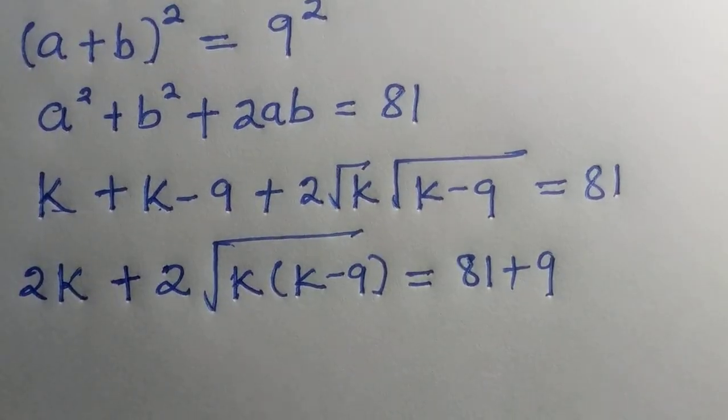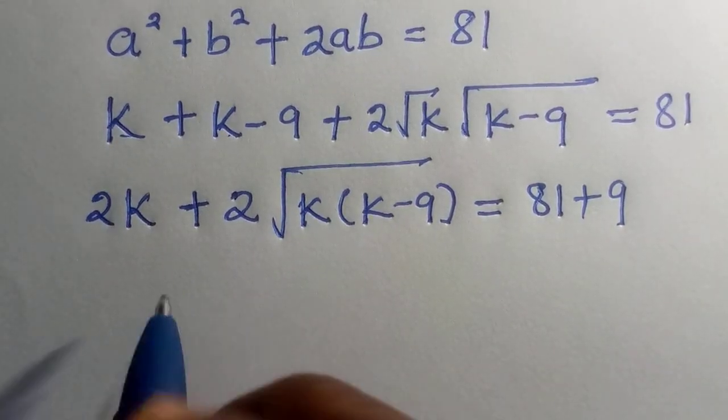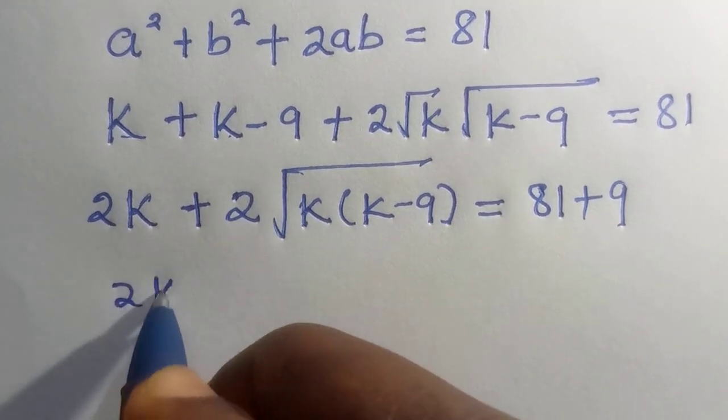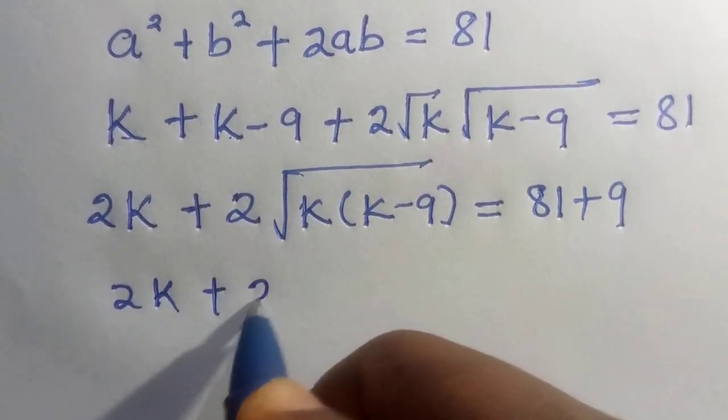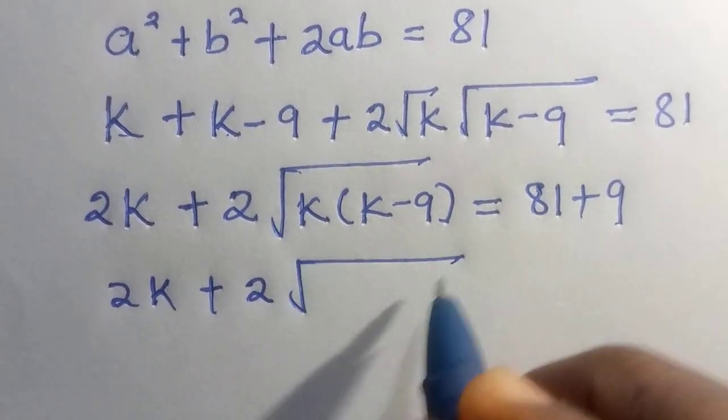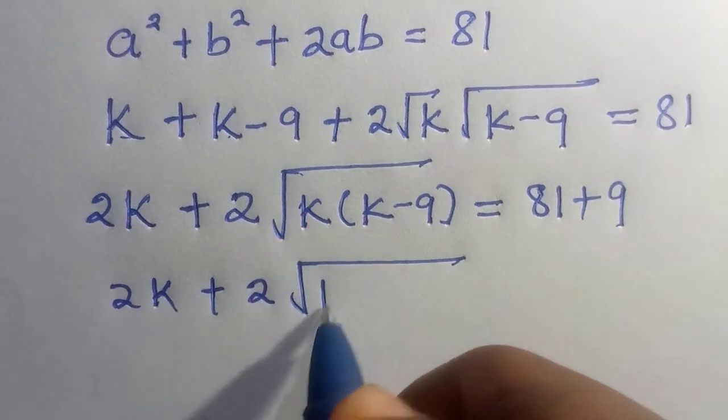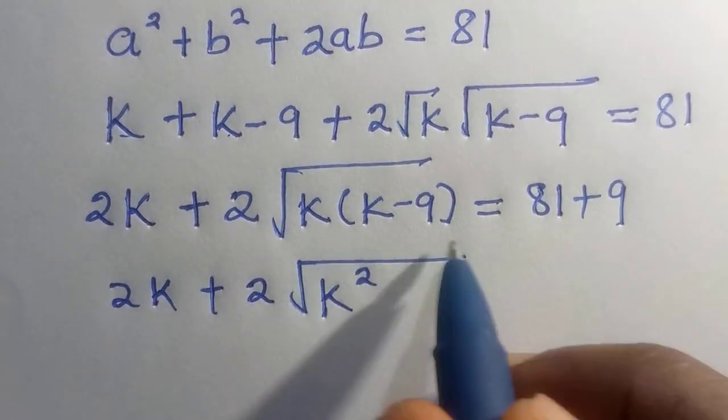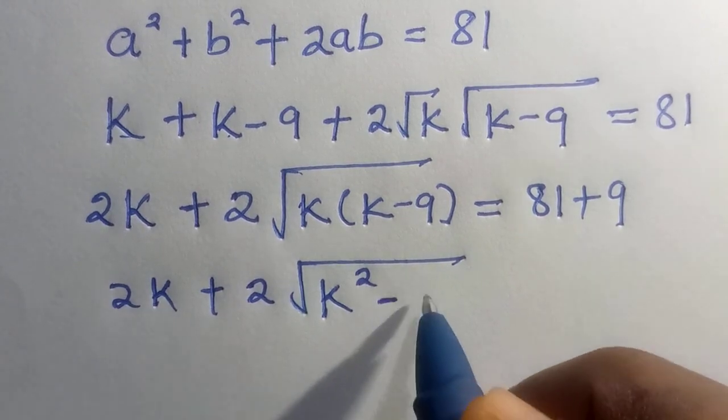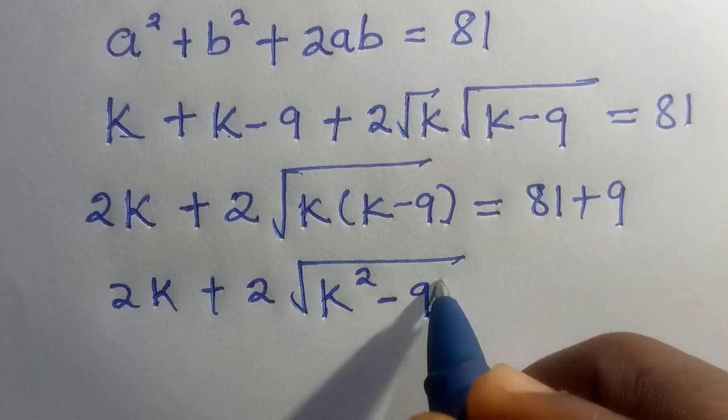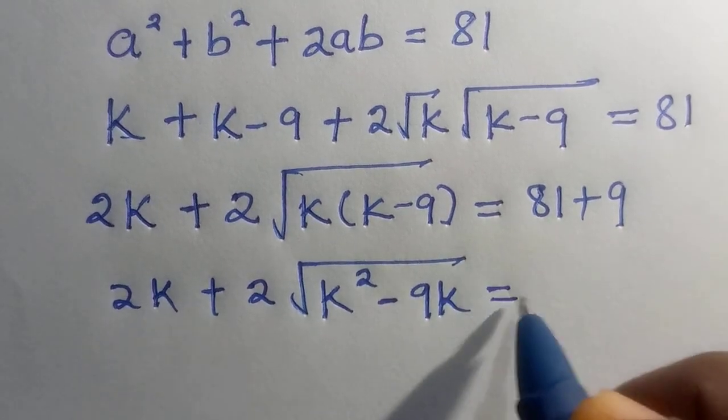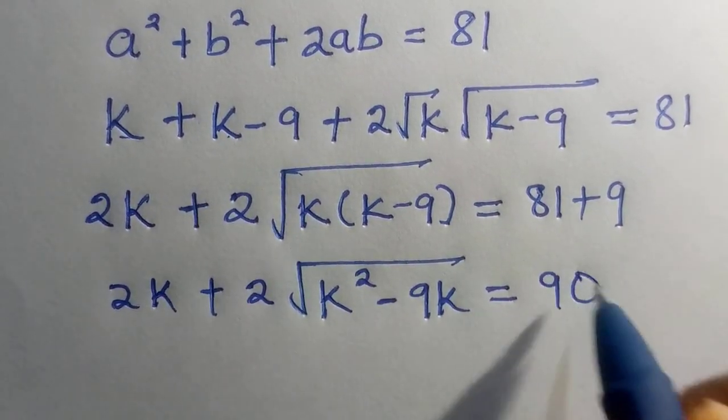For this negative 9, we take it to other side. Here we have 2k plus 2 square root of k multiplied by k. That gives us k square. And k multiplied by 9, we have minus 9k equals 90.